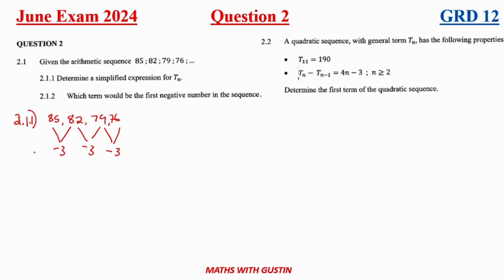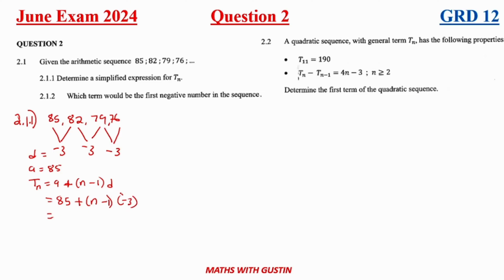So our common difference d is negative 3 and our first term a is 85. Using the general formula Tn = a + (n-1)d, we substitute: Tn = 85 + (n-1)(-3). Expanding: 85 minus 3n plus 3, which simplifies to Tn = 88 minus 3n. That is our general term.